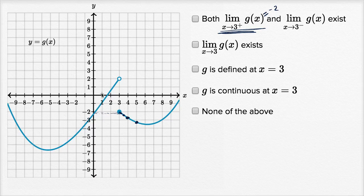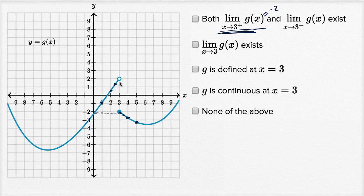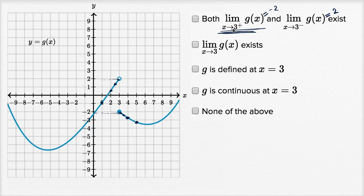Now let's think about it from the left-hand side. g of one looks like it's a little bit greater than negative one. g of two is less than one. g of two point five is between one and two. g of two point nine looks like it's a little bit less than two. g of two point nine nine is getting even closer to two. g of two point nine nine nine nine nine would be even closer to two, so it looks like this limit from the left is approaching two. Both of these limits — from the right and from the left — exist.